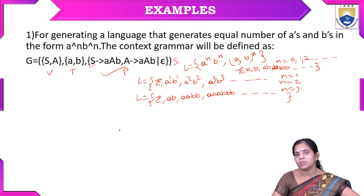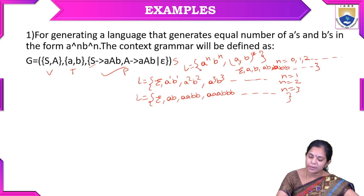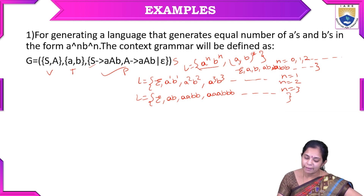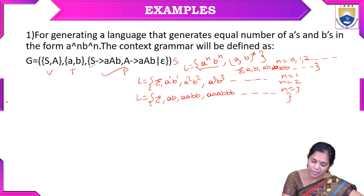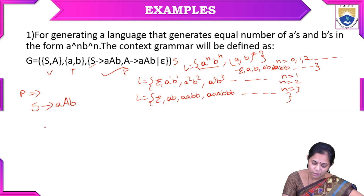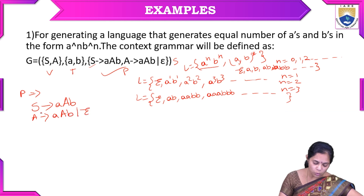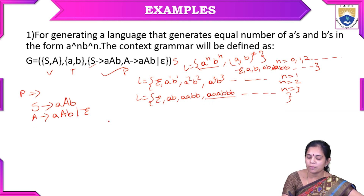This is the language formed for A^N B^N. With this language, we have production rules for the context-free grammar. The production rules are: S → ASB, and A → ASB | epsilon. These are the production rules with which we form strings.